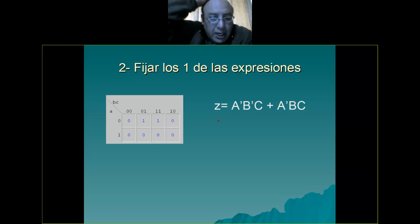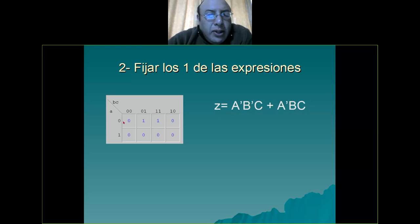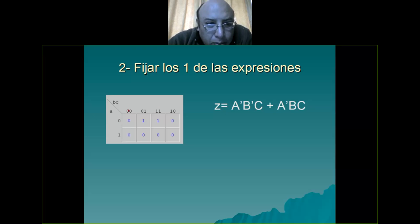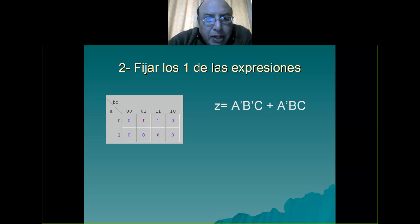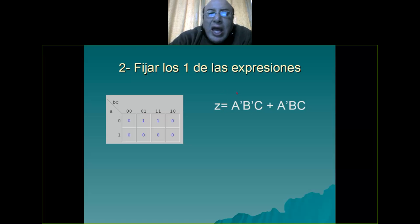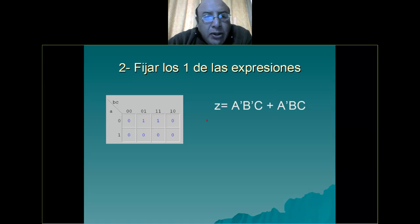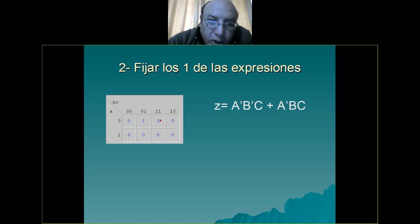Entonces, esa expresión es Z igual a A complemento B complemento C. Aquí ese A complemento es de A. B complemento y C es el primero que agarramos — ese es el término que representa a ese circuito combinatorio. Más A complemento: aquí está A complemento B y C normal.